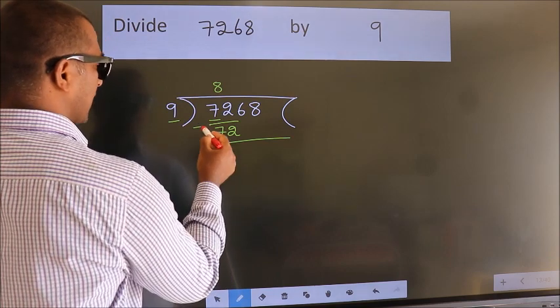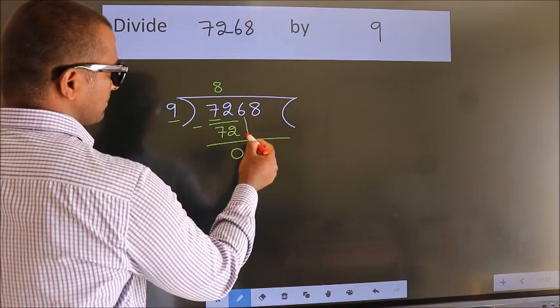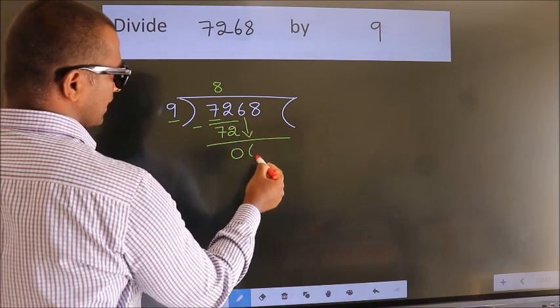Now we subtract and get 0. After this, bring down the next number. So, 6 comes down.